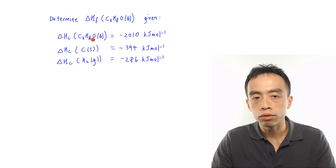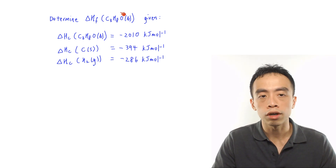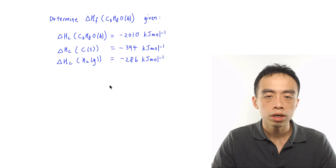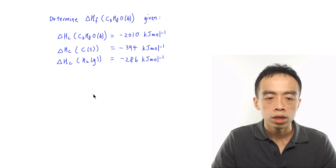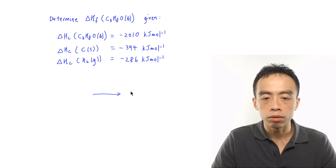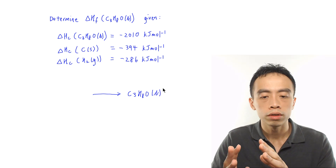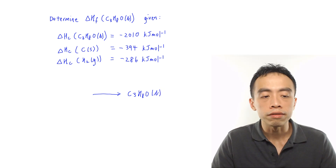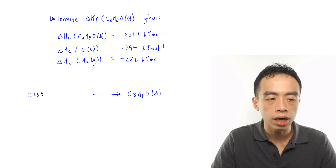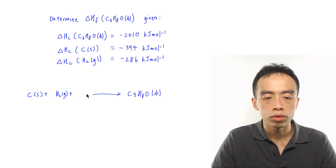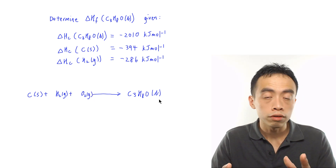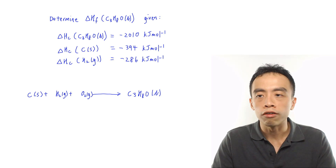Let's write out the equation involving enthalpy change of formation of propanol first. Formation means forming one mole of compound from elements in their standard state. So I am forming C3H8O in the liquid state — one mole of propanol. For elements, I have carbon graphite, H2 gas, and O2 gas. Enthalpy change of formation is with respect to per mole of propanol.